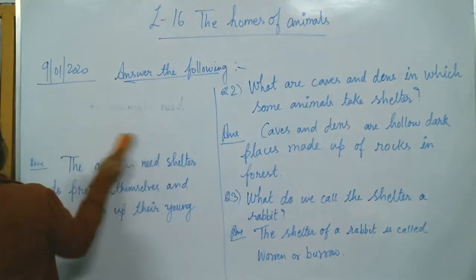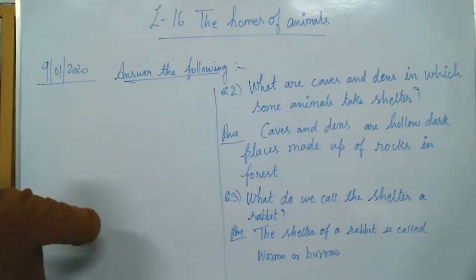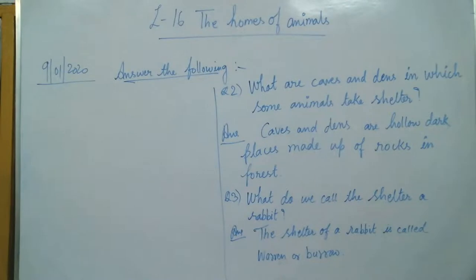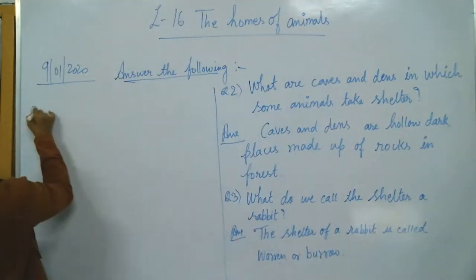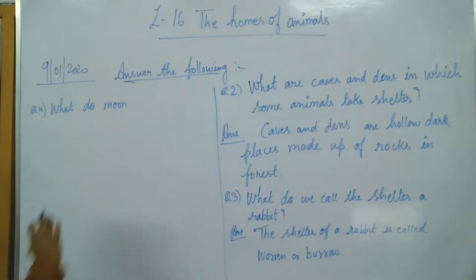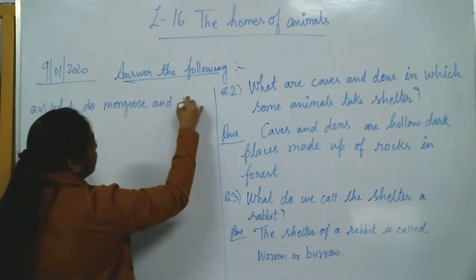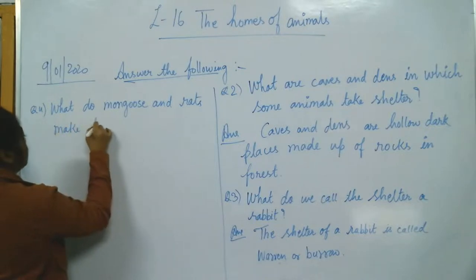Question number 4: What do mongooses and rats make to live? Where do they live and what do they make?